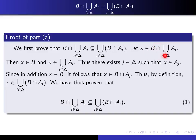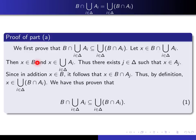Let x be an element of this intersection. That means it's in b and it's in the union. Now I write down what it means to be in the union — using a different letter j to avoid confusion — thus there exists an index j such that x is in a sub j. Since in addition x is in b, it follows that x is in b intersected with a sub j. So there exists an index j such that x is in b intersected with a sub j, and by definition x is in the union of all the b intersected with a sub i's as i varies over delta. We have now proved this inclusion.